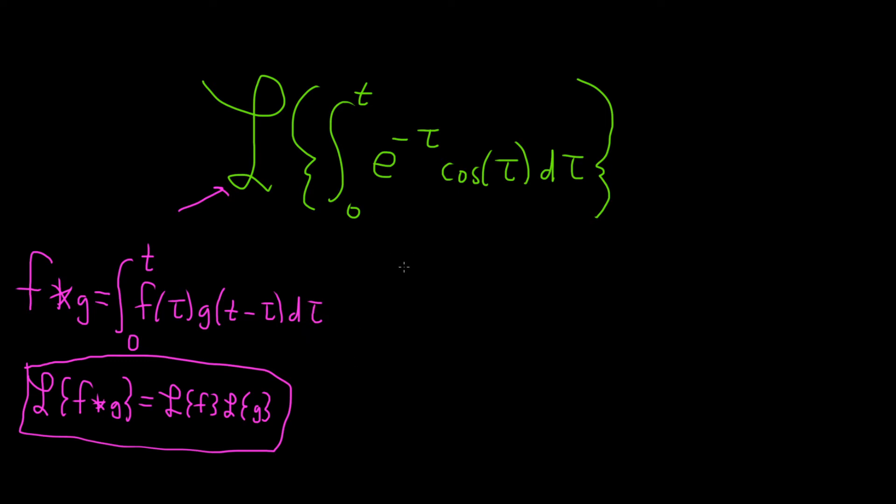Okay, so I don't see anything here with a t minus tau. So I am thinking that it might be a good idea to set f of t equal to e to the negative t cosine t. You might say, well what about g? Well we can always make g one. Right? So g of t will be equal to one. And then now you see it should match.